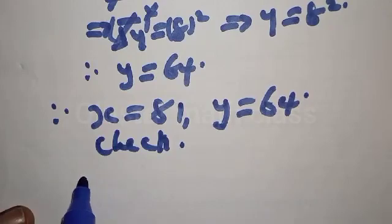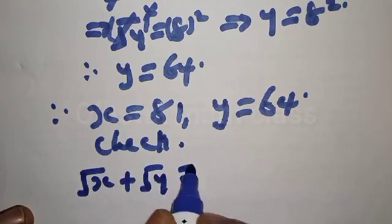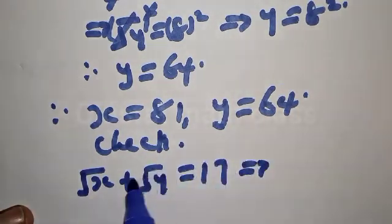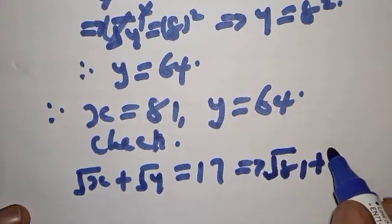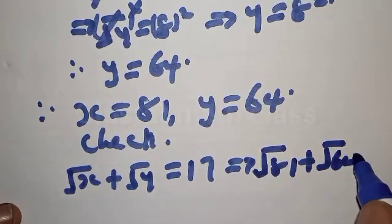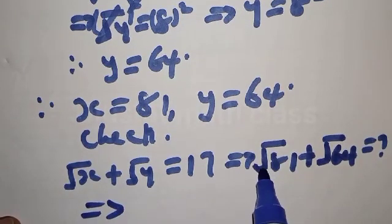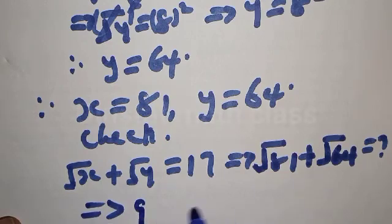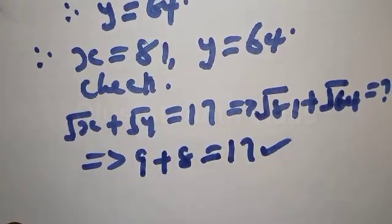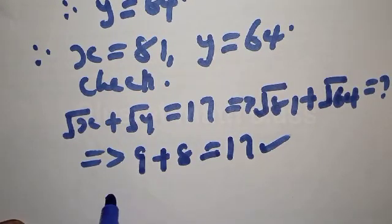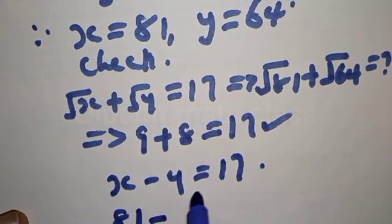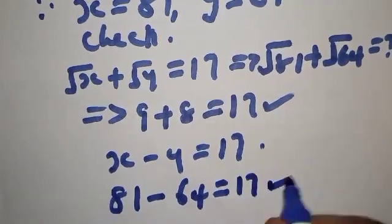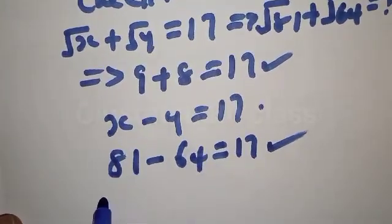Let's verify. Checking equation 1: square root of x plus square root of y equals 17. Substituting x equals 81 and y equals 64: square root of 81 is 9, square root of 64 is 8, and 9 plus 8 equals 17. That satisfies equation 1. Checking equation 2: x minus y equals 81 minus 64 equals 17. That also satisfies equation 2.